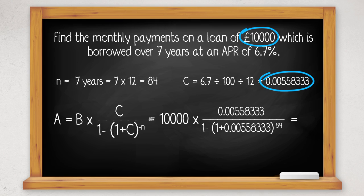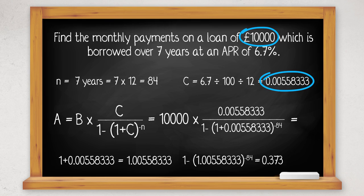We need to work out this part first. Start with the bit in the brackets first. 1 plus 0.00558333 is 1.00558333. Use the power button on your calculator to raise that to the power of minus 84, and then take it away from 1. Using this calculator, this is 0.3735557915.